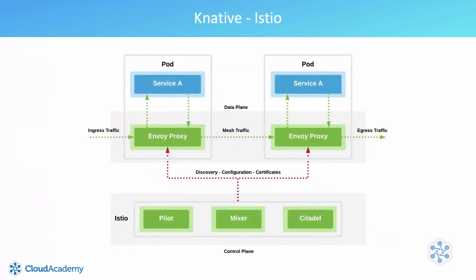Knative is typically configured with Istio acting as the networking layer. Istio, in this context, acts as an interface between the Knative components and the underlying Kubernetes platform. Istio works by creating a service mesh that sits on top of Kubernetes, implementing a control plane and a data plane. The data plane intercepts container traffic being sent from one service to another and routes it via a proxy container. The Envoy-based proxy container is injected into the pod automatically at pod creation time and constantly receives routing information from the Istio control plane.